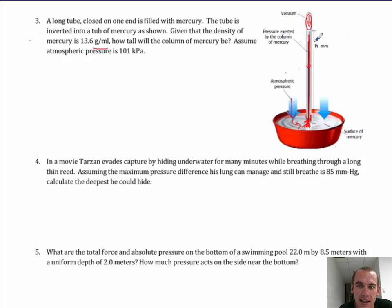So when the weight of this column of mercury is balanced by the force from this pressure, we're going to have a static column and that's what this problem is about. So it says how high is this column if atmospheric pressure is 101 kilopascals. So basically we have atmospheric pressure equals the pressure from the mercury and the pressure from the mercury is equal to the density of the mercury times the acceleration due to gravity times the height.